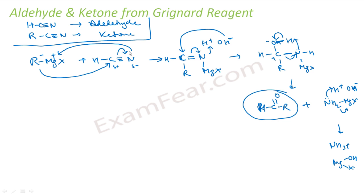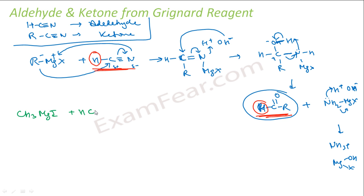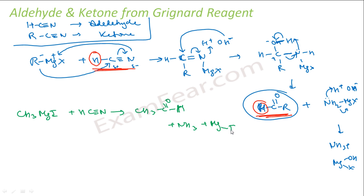This aldehyde came from using HCN. The H in HCN gives the H in the aldehyde RCHO. For a real example: CH₃MgI reacts with HCN, and after hydrolysis with water, you get CH₃CHO (ethanal/acetaldehyde), plus NH₃ and MgI–OH.